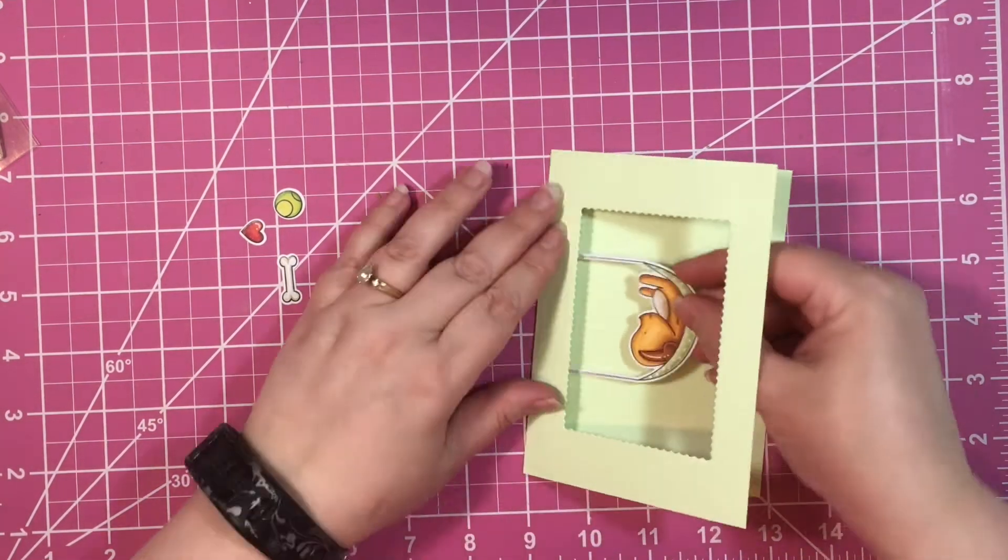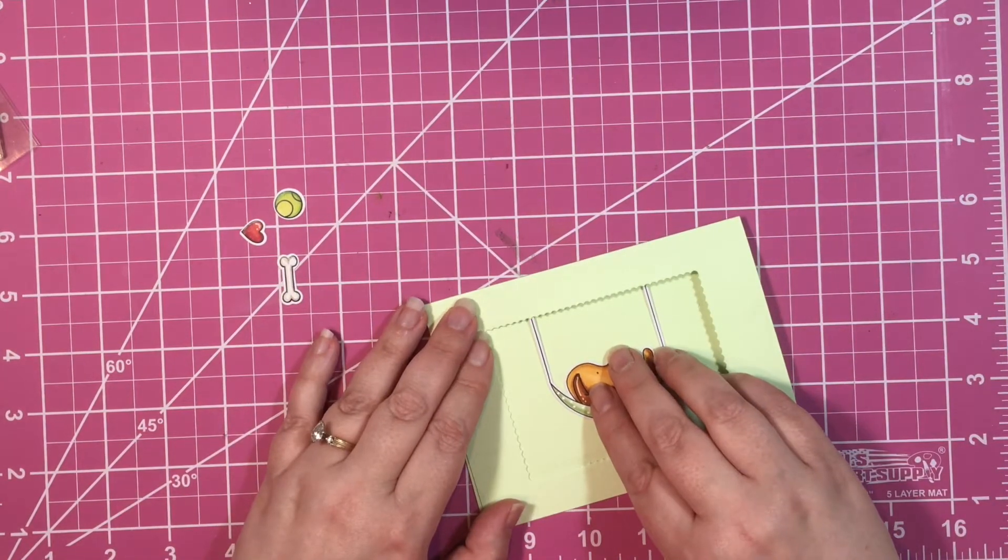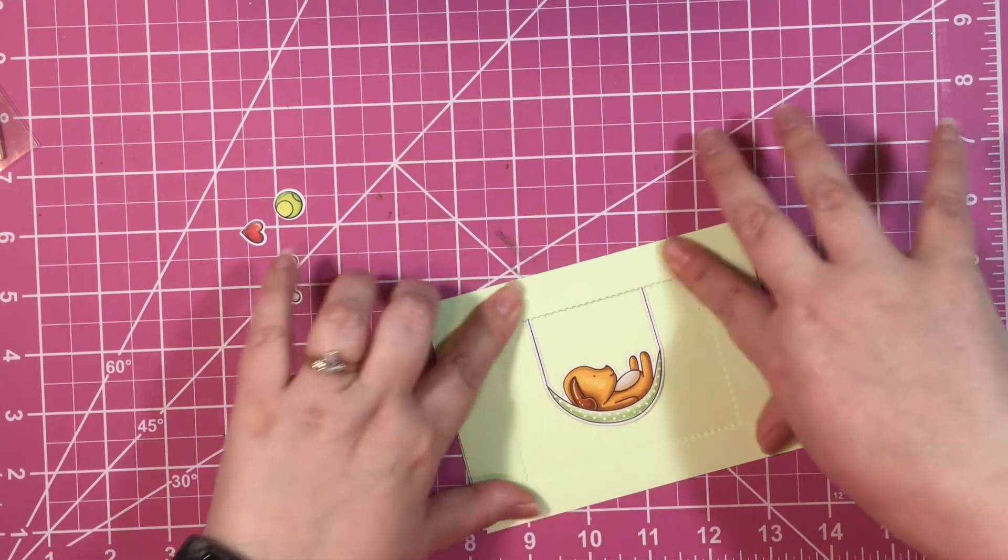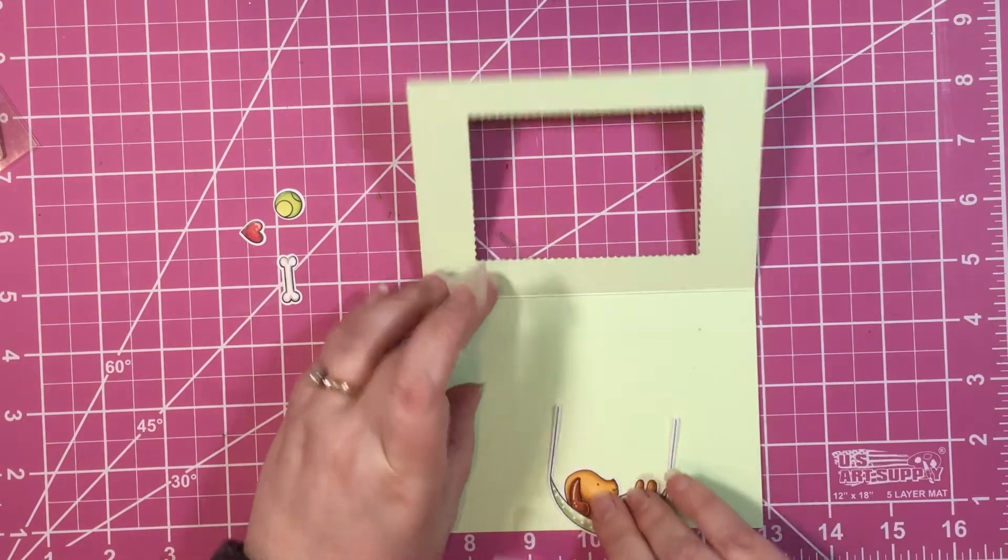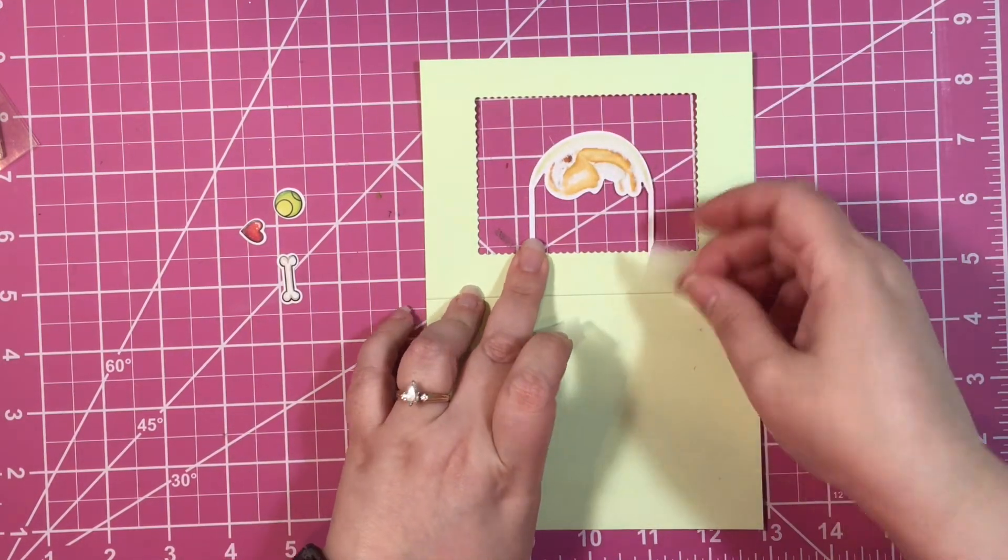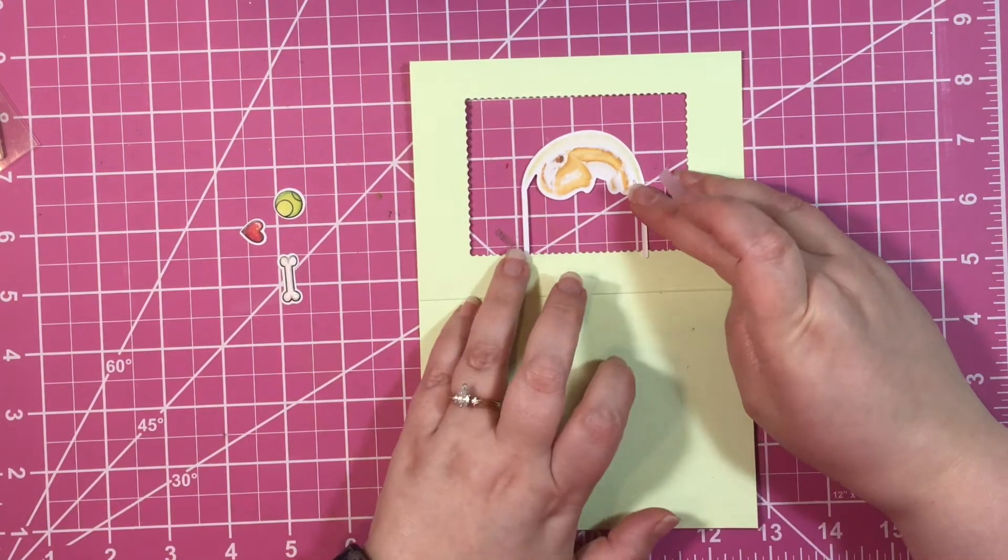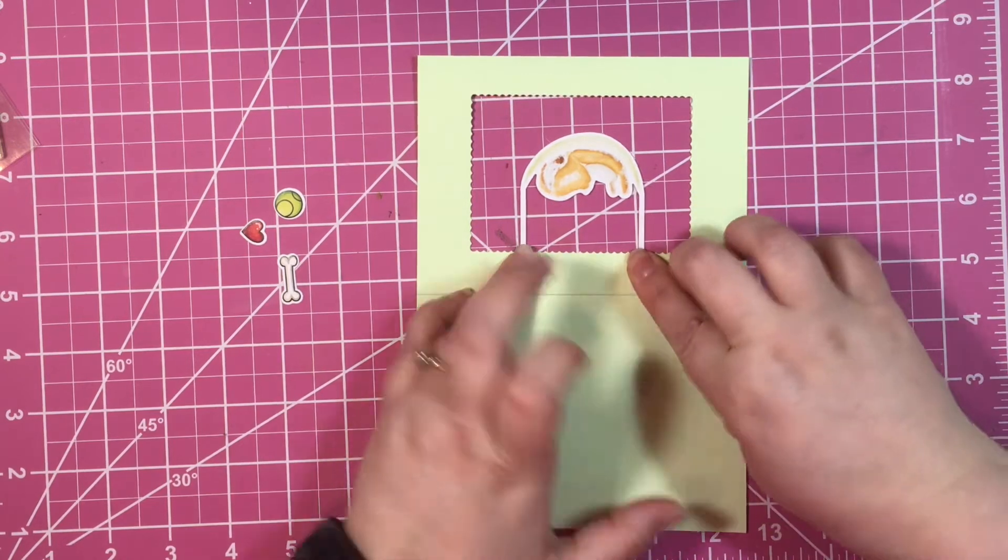I also cut out the bone, the little ball, and a heart because I'm going to add that to the lower right hand side of the card, and then I'm going to add the sentiment to the top left hand side.